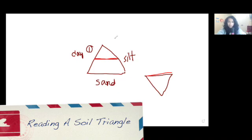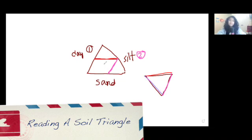The next place we go is going to be silt. So we start here and silt, we do this. Let's say 50% silt. This is 50%, so you just draw it straight through here. It is 50% sand. This is 50% sand, so you just draw a line here.